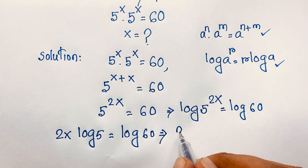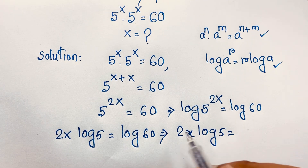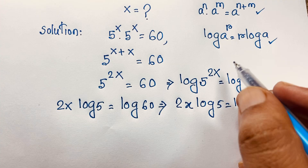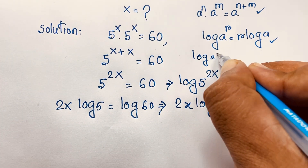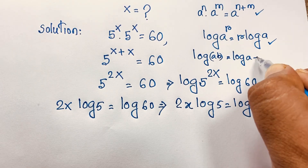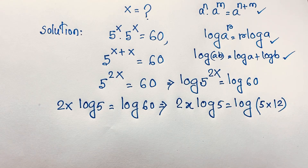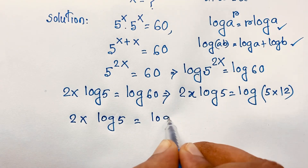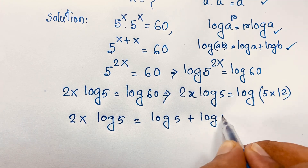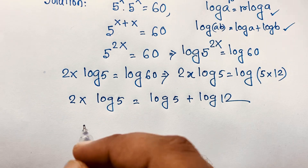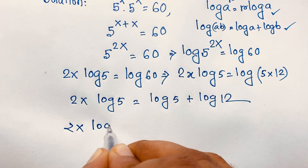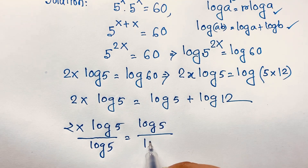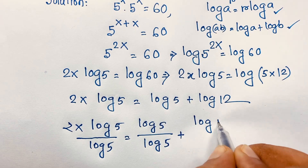Here we have 2x times log 5 equals log 60. We can write 60 as 5 times 12. We also know that log(a·b) equals log a plus log b. Applying this formula, it becomes 2x log 5 equals log 5 plus log 12. Now I divide both sides by log 5, giving 2x equals log 5 over log 5 plus log 12 over log 5.